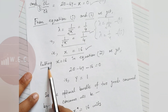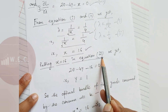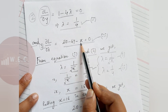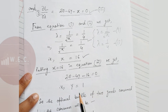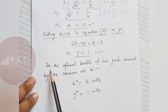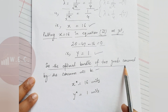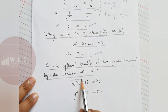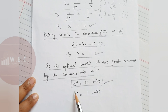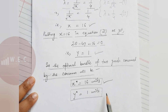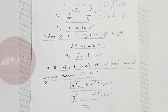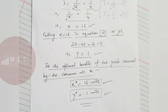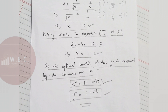Substituting x = 16 into Equation 3: 20 − 16 − 4y = 0, which gives y = 1. So the optimal bundle is x* = 16 units and y* = 1 unit. If the consumer spends all income on the two goods and purchases 16 units of x and 1 unit of y, utility will be maximized.